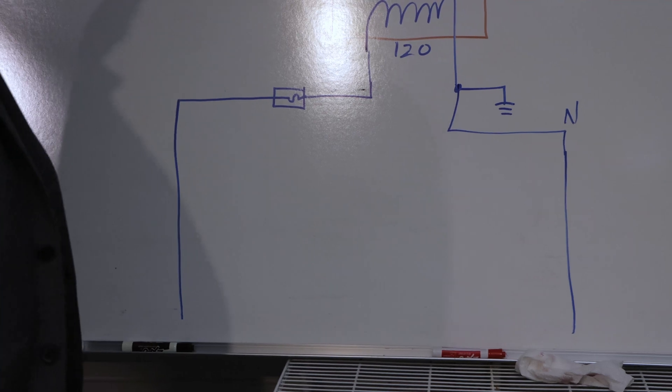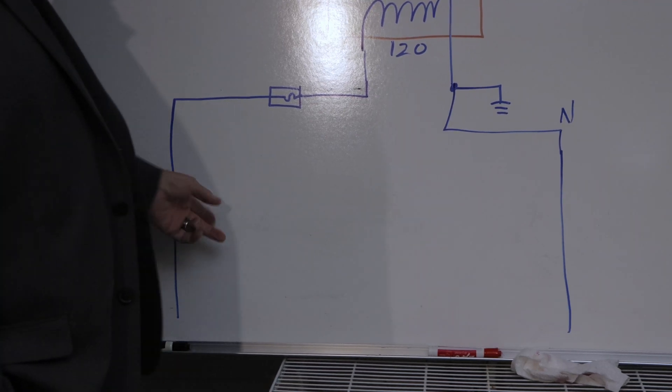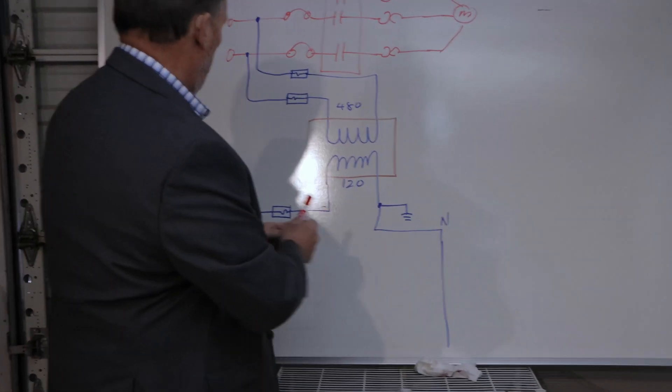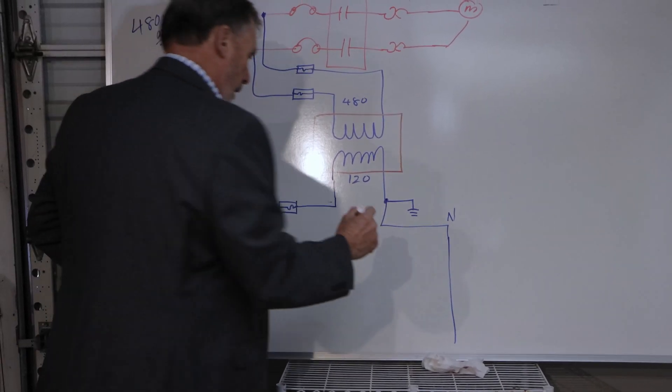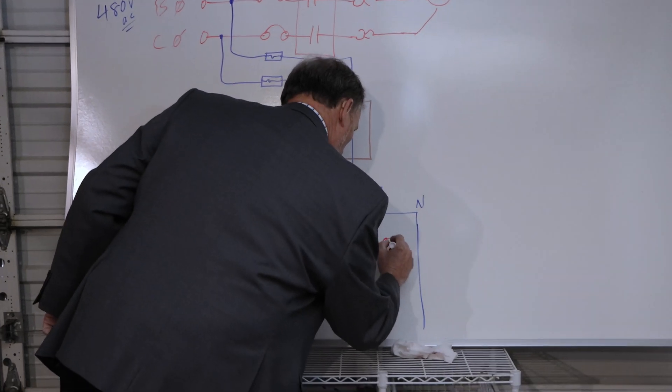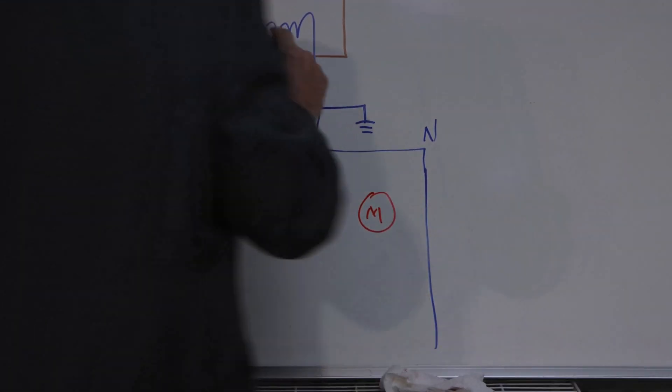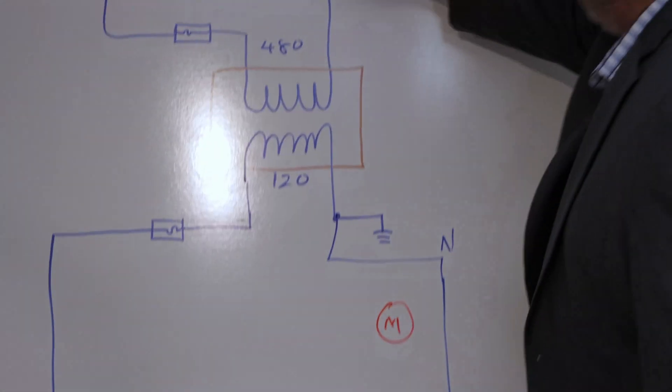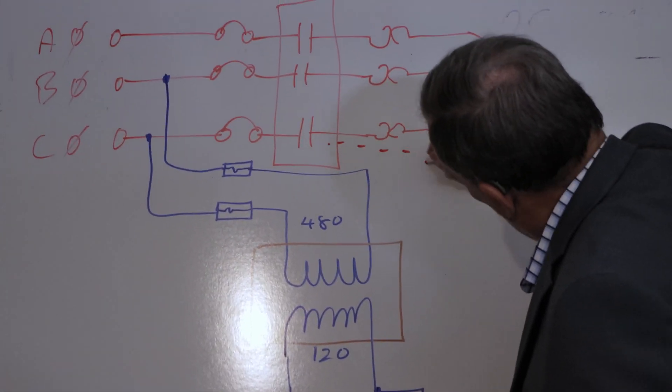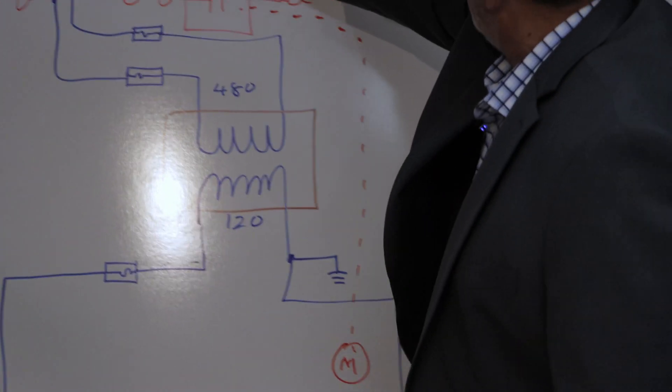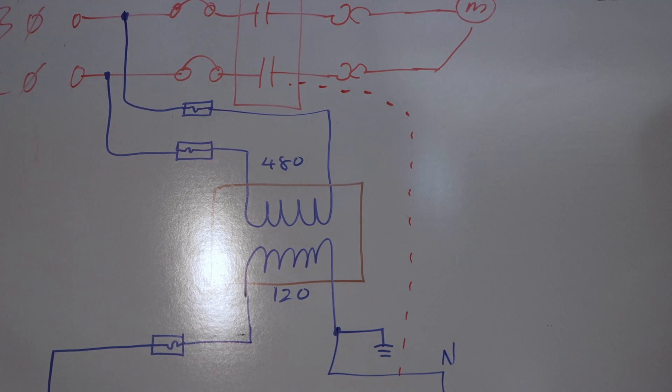Now, you're probably thinking, well, yeah, but what does this have to do with turning the motor on? Well, I've also got a motor coil. Somewhere in this diagram, I'm going to have a motor coil. I'm going to label it M. And that motor coil, you can see this, is going to be mechanically linked to close those three sets of contacts.